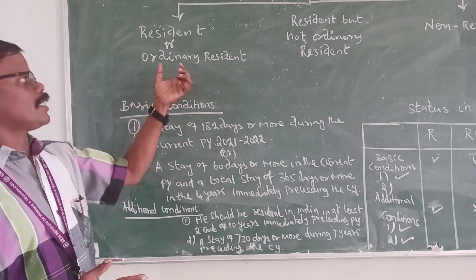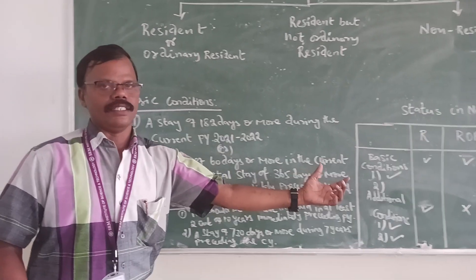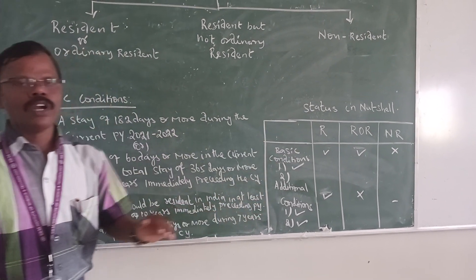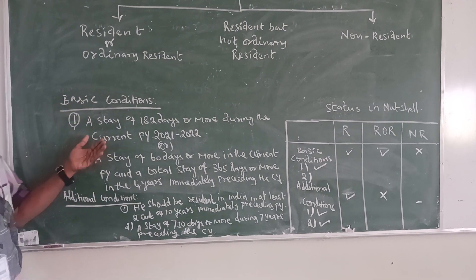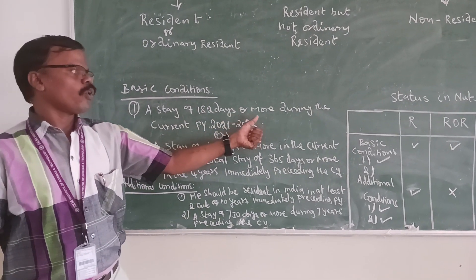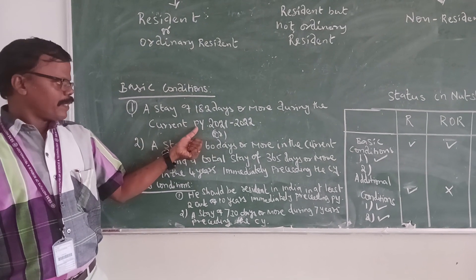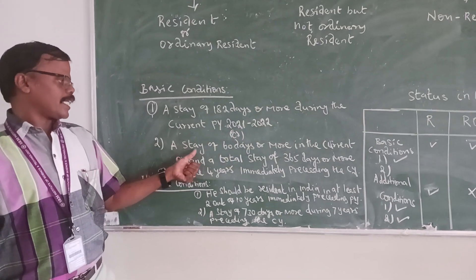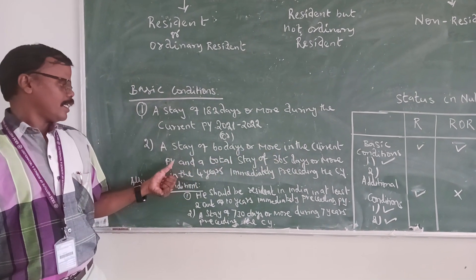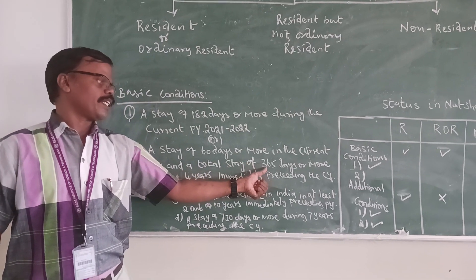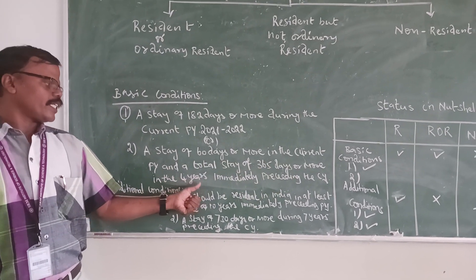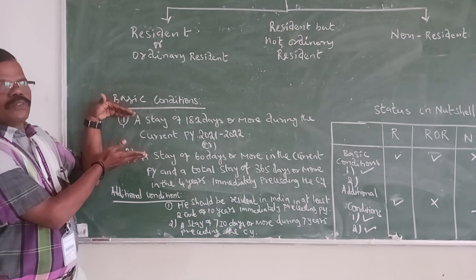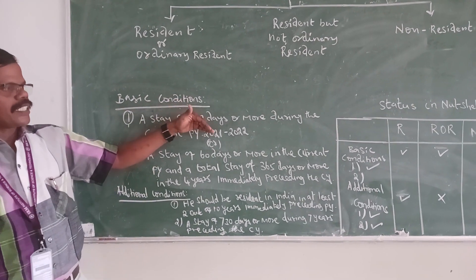First, Resident and Ordinarily Resident — the people who have fulfilled the basic condition. The basic condition is: a stay of 182 days or more during the current previous year (2021–2022 or 2022–2023), OR a stay of 60 days or more in the current previous year and a total stay of 365 days or more in the 4 years immediately preceding the current year. Those who have fulfilled this basic condition in India are called Resident.